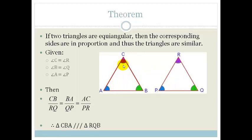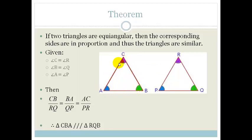So let's think about it. Before we've said the equi-angular is similar, and therefore the sides are in proportion. Now we're saying, if they're equi-angular, that means the sides are in proportion, and therefore they are similar.